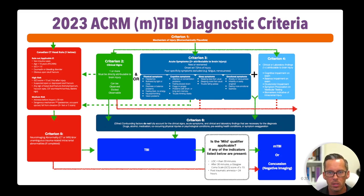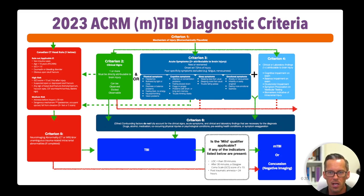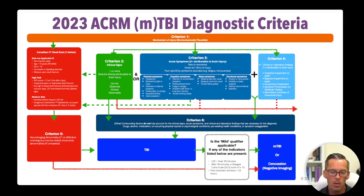Criterion three is acute symptoms — you need two or more acute symptoms within 72 hours that are directly attributable to the brain injury. If a symptom already existed, such as anxiety or neck pain, it has to be new or worsened. For example, if your neck pain is normally a two out of six on the Sports Concussion Assessment Tool scale, and after a biomechanically plausible mechanism of injury it's now a three, that meets the criteria even though it's not a new symptom. Symptoms are grouped into four categories: physical, cognitive, sleep, and emotional.